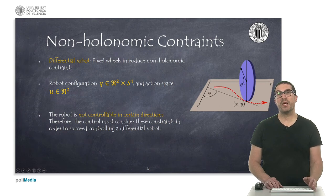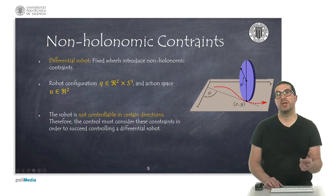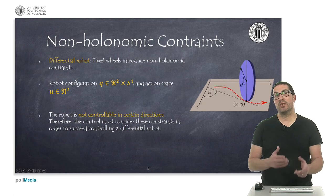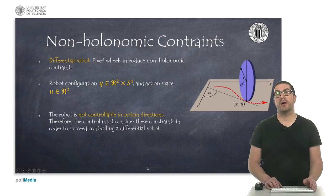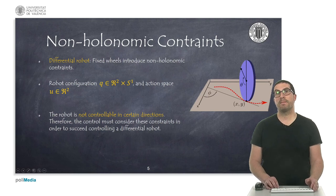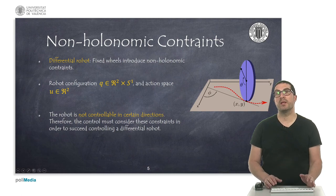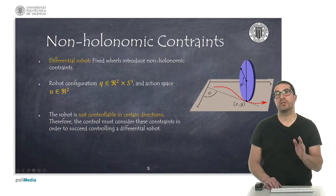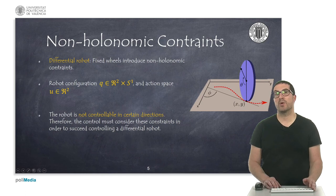In practice, we have to control a robot over R² × S space, which means the Cartesian X-Y space together with the orientation, using a set of control actions defined in R² space — the wheel speeds. Due to the non-holonomic constraint, the robot is not controllable in all directions at any time instant, only in certain directions. Therefore, the control to be designed must take these considerations into account, and for instance, we cannot control a lateral movement of the robot using this kind of wheels.